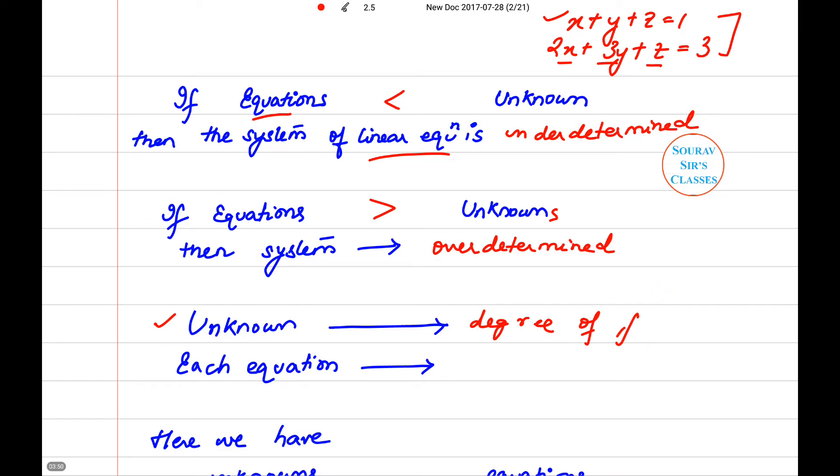So degree of freedom. And each equation is seen or can be viewed as a constraint that restricts one degree of freedom. That means each equation will constrain one degree of freedom.